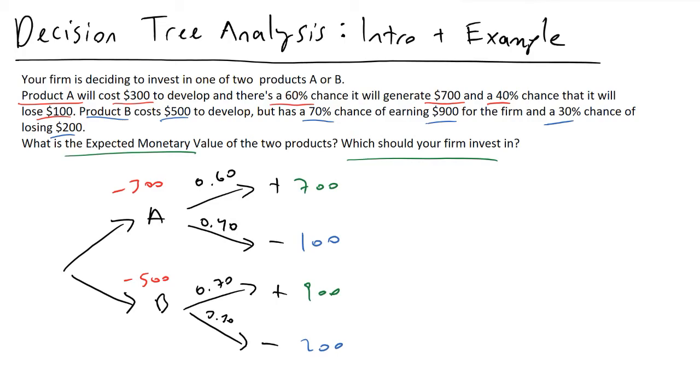Basically, the question that we're trying to answer here is, what is the expected monetary value, EMV, for product A and for product B? So focusing on product A, what this will be equivalent to if I was to write this out generically, is we're going to have the development costs of A, which I'll write as D_A.